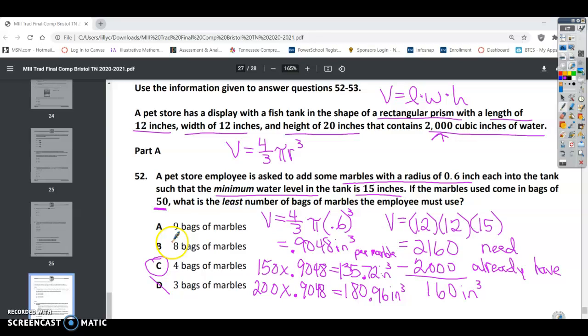Now you can go ahead and check the 8 bags and the 9 bags. Those would also fill the fish tank even fuller, but this says a minimum water level in the tank. So that's why we started with the lowest number first because we wanted that minimum number. So number 52, your answer is C.